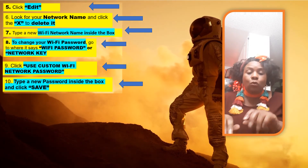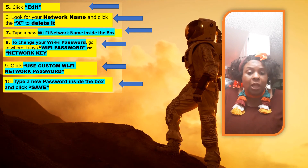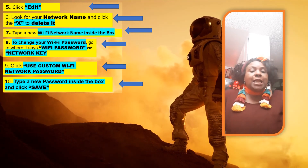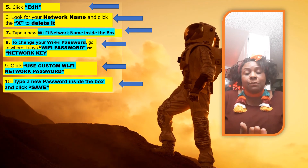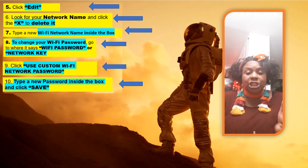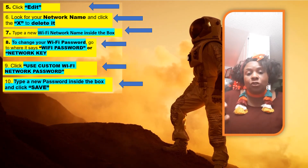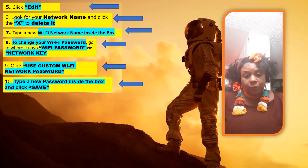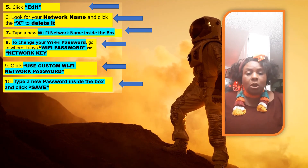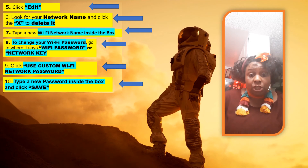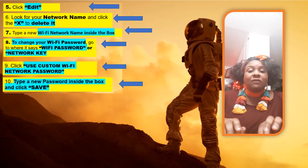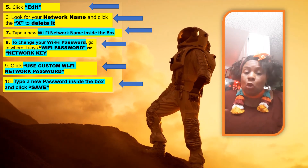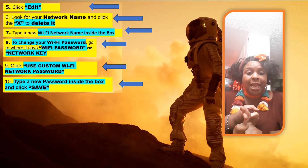Step ten: type in whatever password you like inside that box, then click save. Now, if you are asked — because sometimes AT&T requires it — you may be asked for your device access code. You can find that on the side or underneath your router. It's a long number. Type in the device access code and click submit, then save.